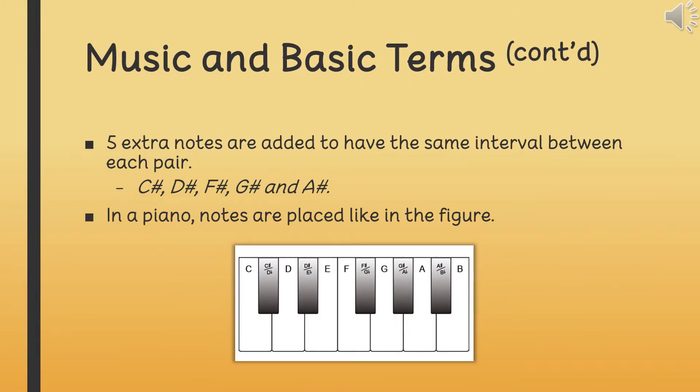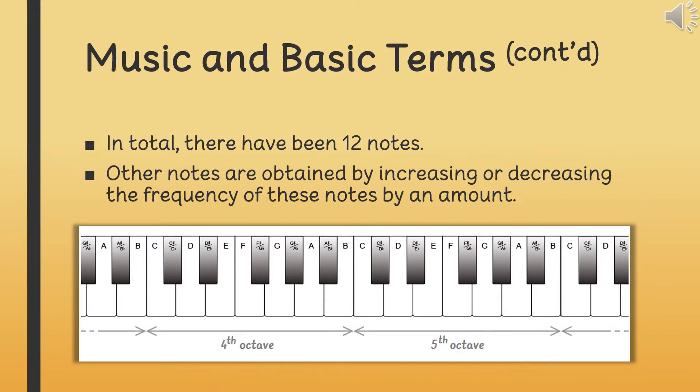Frequency intervals between B-C and E-F are half of other pairs of notes. In order to have the same interval between each pair, five additional notes exist. Therefore, there have been twelve notes in total.